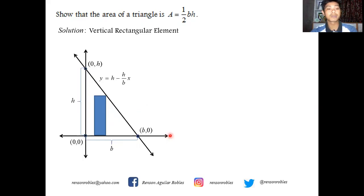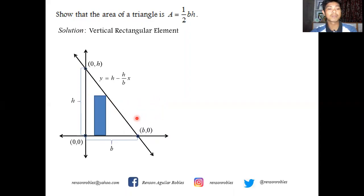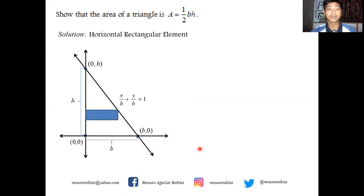The equation to be used when working with the vertical element is y = h − (h/b)x, since we are using a vertical element and must solve for y in terms of x. From the intercept form, rearranging gives y = h(1 − x/b), which simplifies to y = h − (h/b)x. The limit is approached from x = 0, the leftmost portion of the region, to x = b, the rightmost portion.